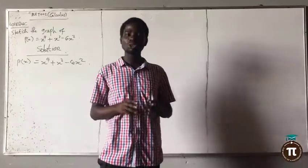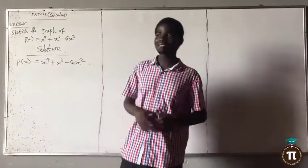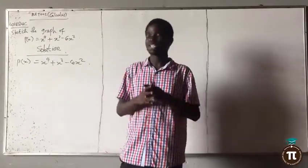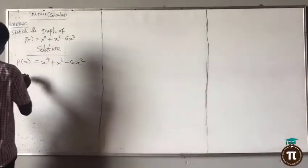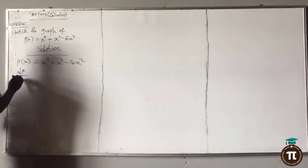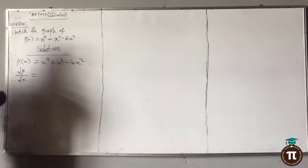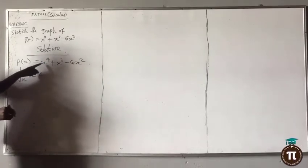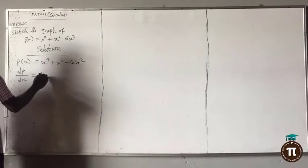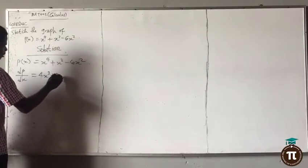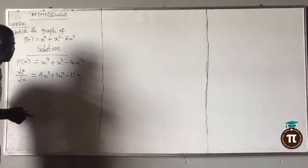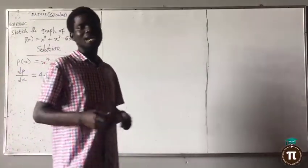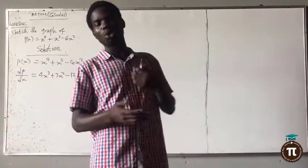I'll show you how the derivative is going to help us. Differentiate dp/dx: it is equal to 4x³ — don't forget the power comes down — plus 3x² minus 12x. Don't forget: at the turning point, either at maximum or minimum point, the dy/dx is always equal to zero first.